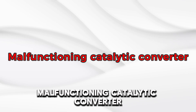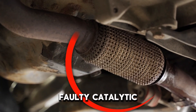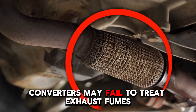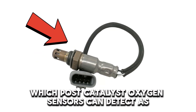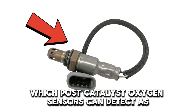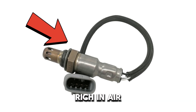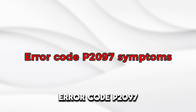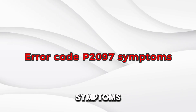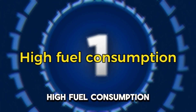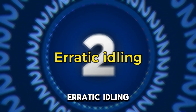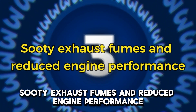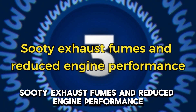Faulty catalytic converters may fail to treat exhaust fumes, which post-catalyst oxygen sensors can detect as rich in air-fuel mixture. P2097 symptoms include high fuel consumption, erratic idling, sooty exhaust fumes, and reduced engine performance.